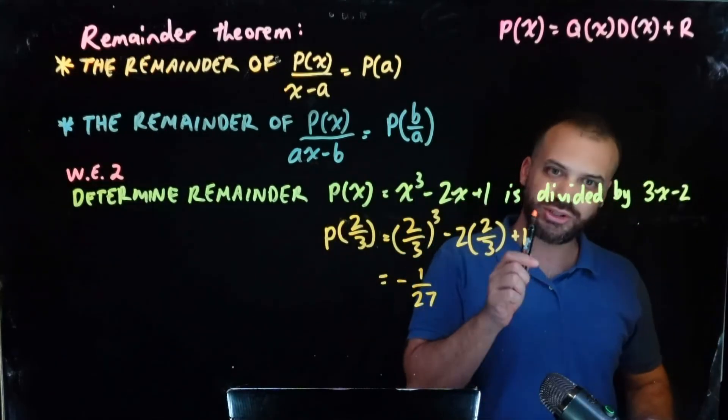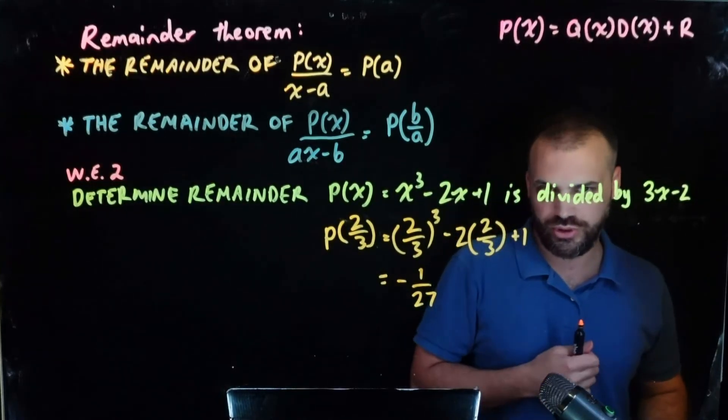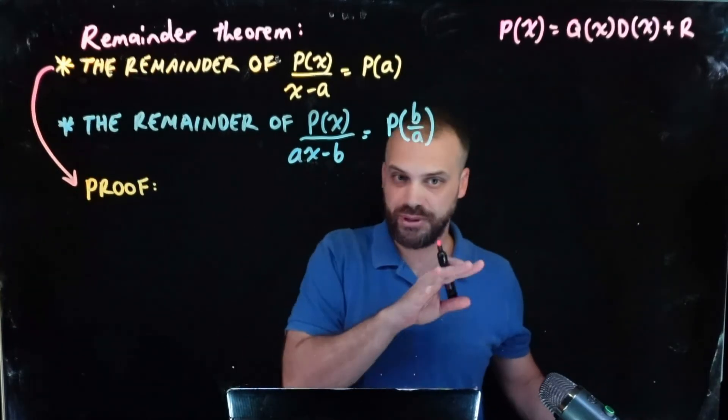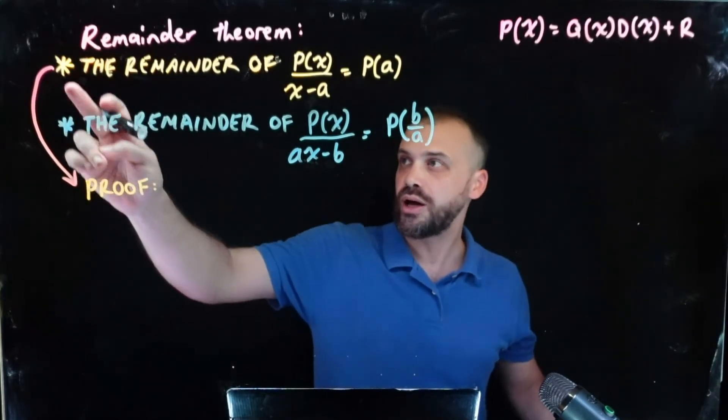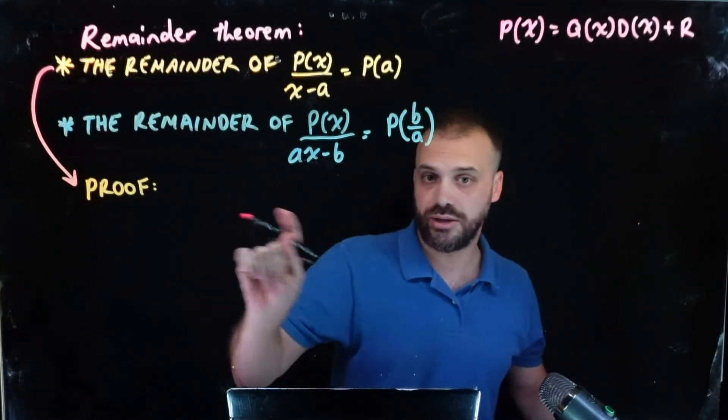Alright, I'm going to get rid of this and I'm just going to show you a very fast proof of why the remainder theorem works. Now I'm going to prove this simpler version. I'll leave it to you to prove that one, but it's just as easy to prove, but just a little bit easier to prove that one. Okay, so we're going to use this formula in our proof.